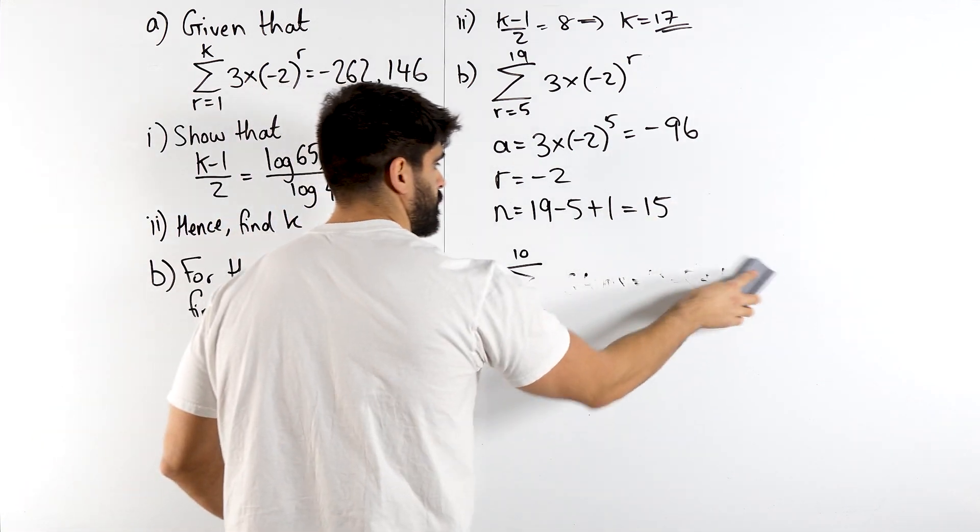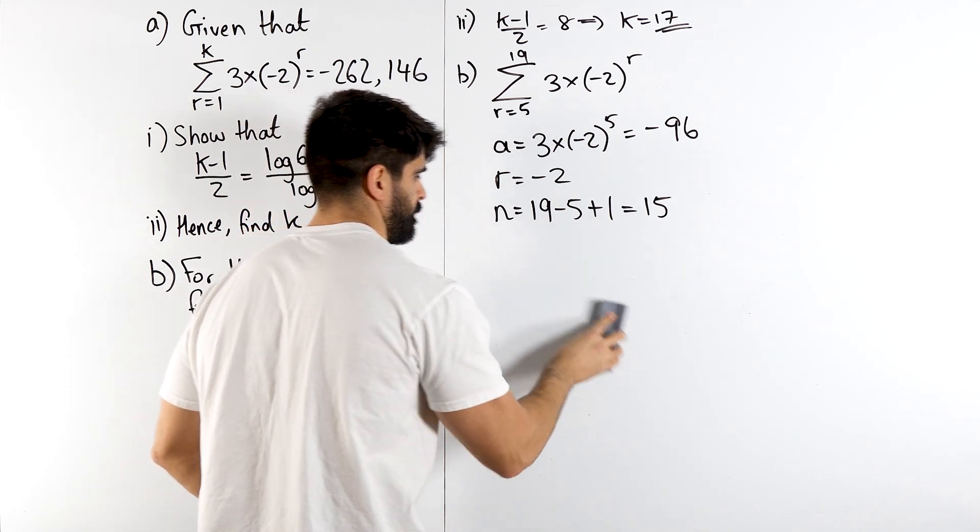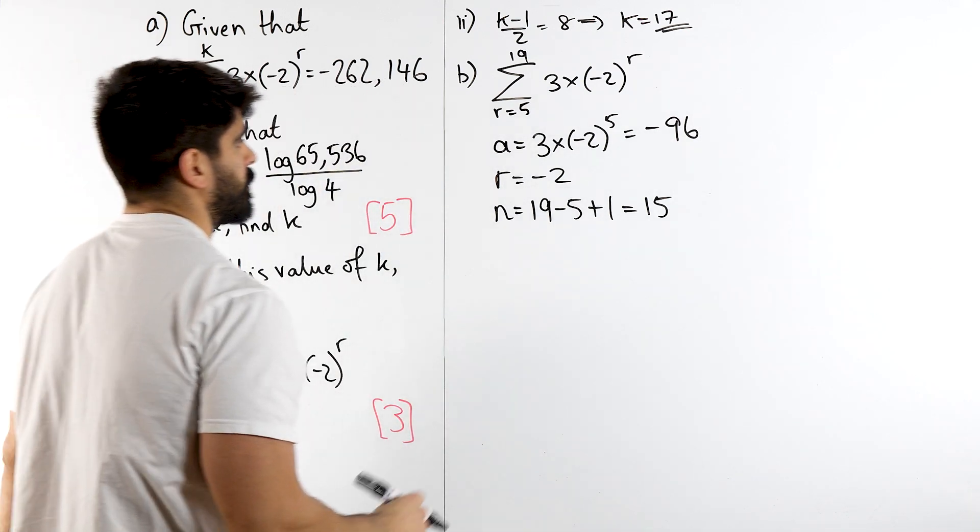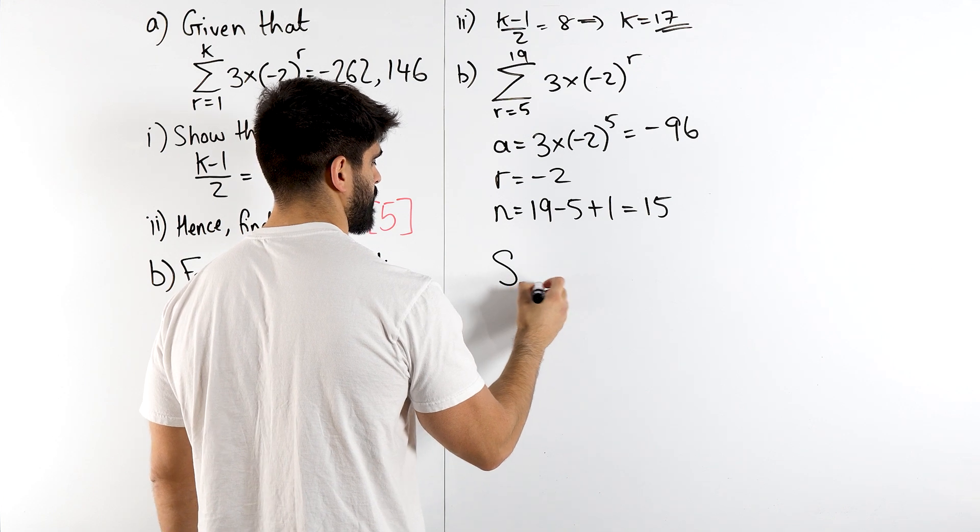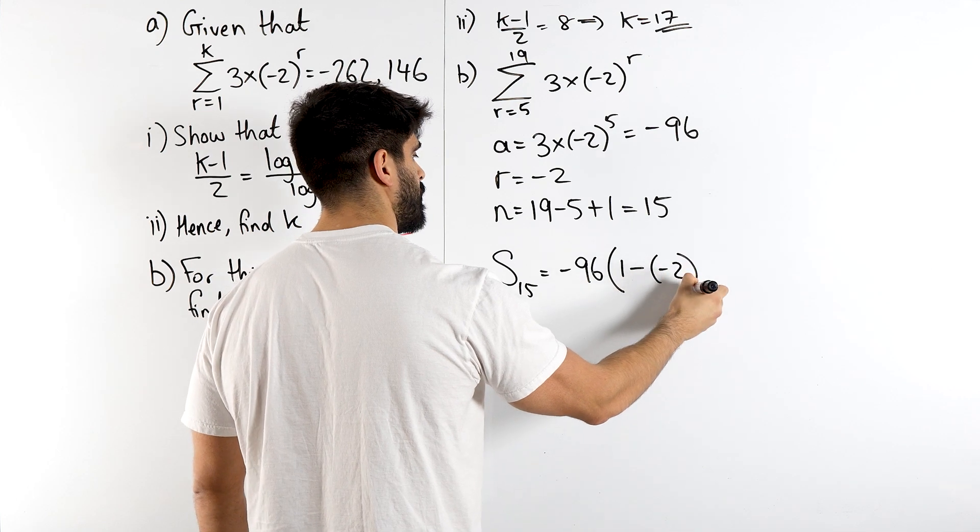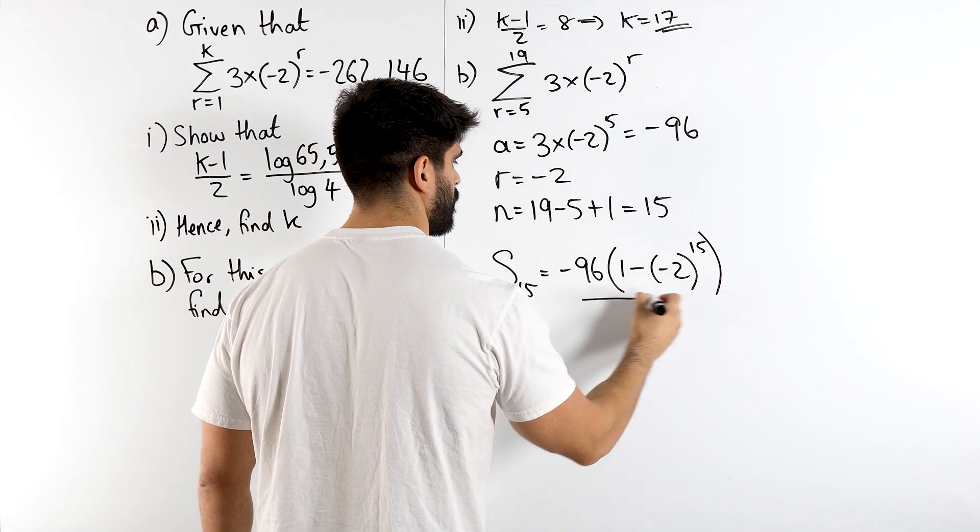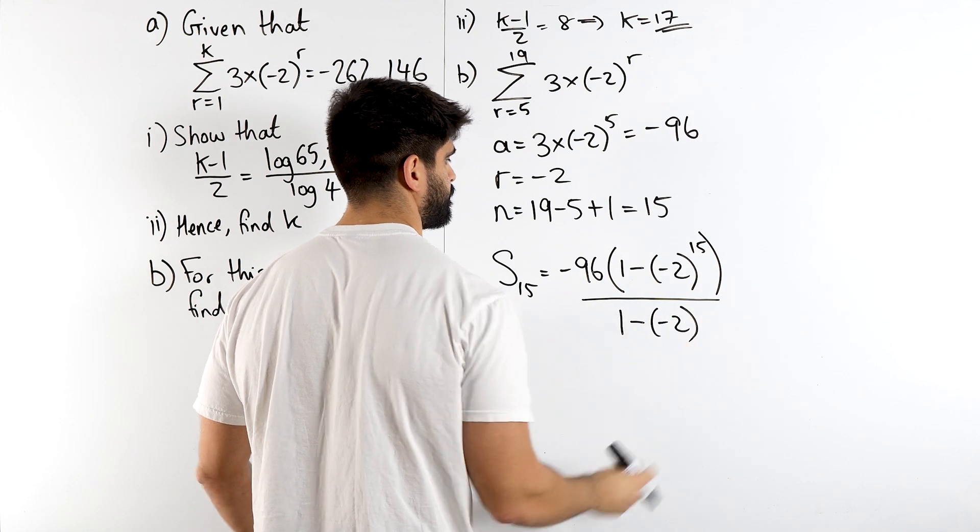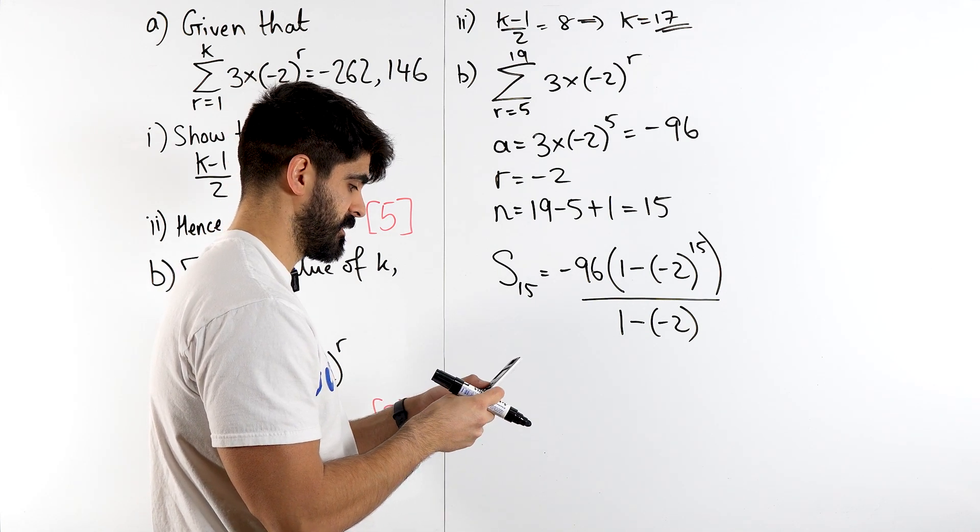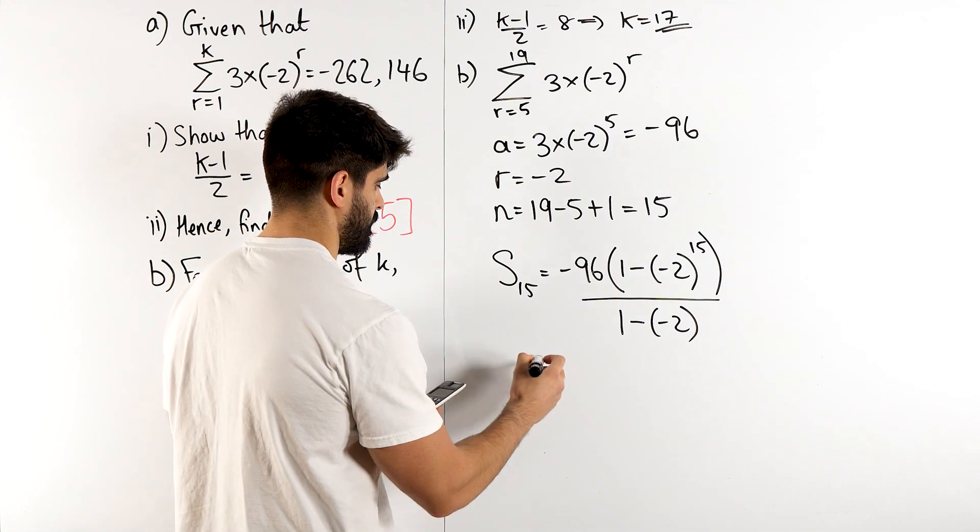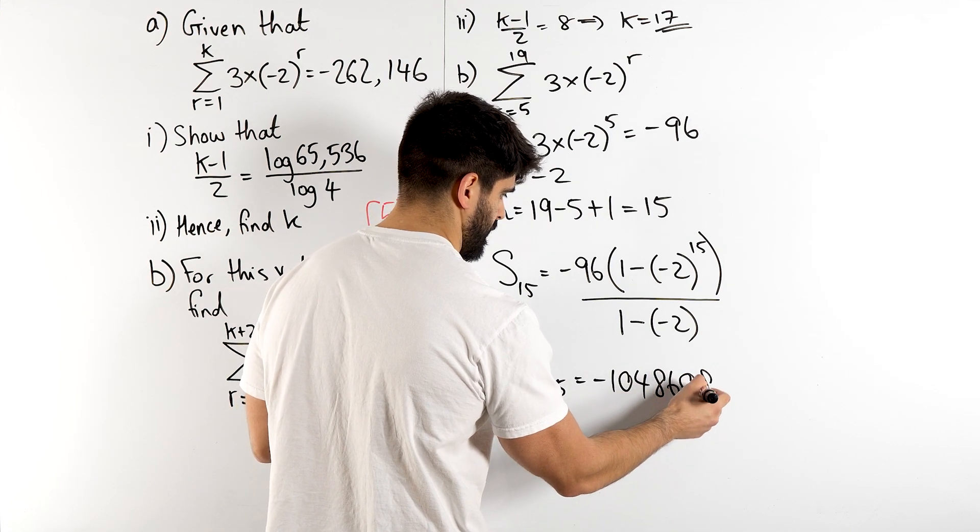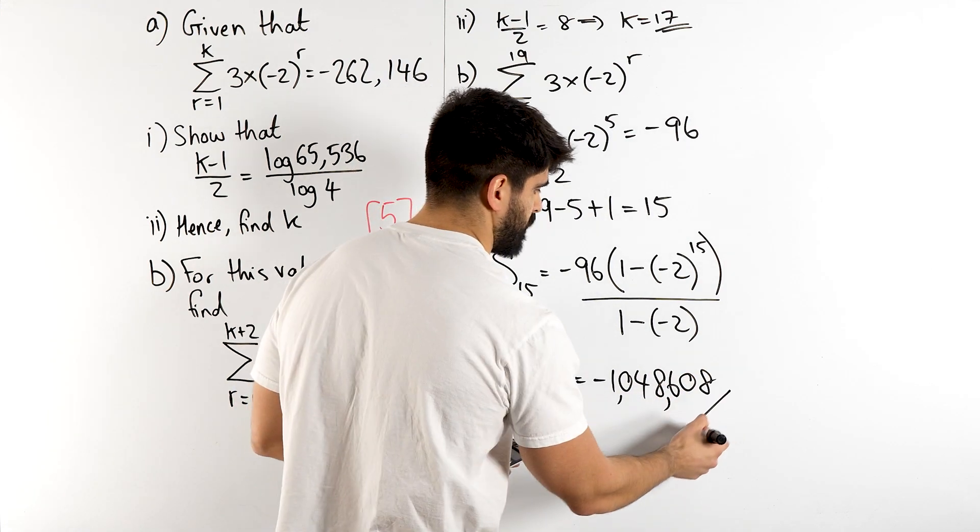All right, so let's sum those 15 terms. Using my summation formula I'm summing 15 terms. My first term is minus 96, then 1 minus r to the power of n, which is 15, all over 1 minus r. So we've got minus 96, 1 minus minus 2 to the power of 15, all over 1 plus 2. So I get a hefty minus 1,048,608.